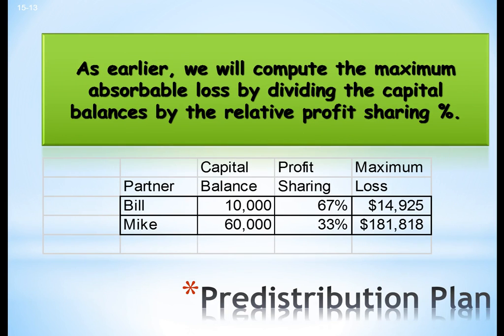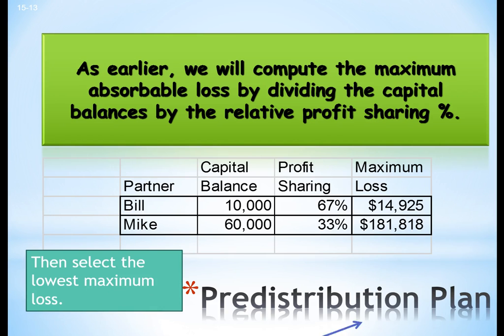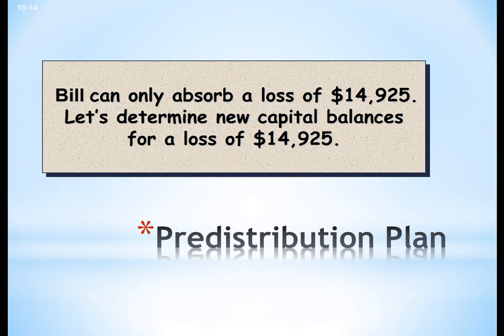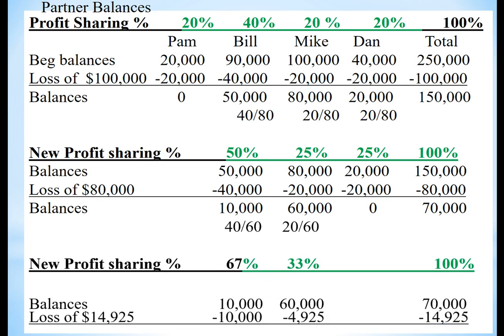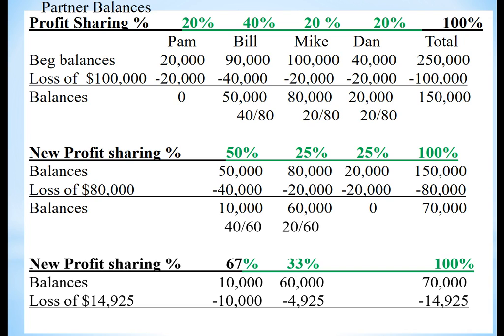We go through the process again, and now our lowest is $14,925 for Bill. Bill can only absorb a loss of $14,925. So let's determine new capital balances for a loss of $14,925. We allocate the $14,925, which zeroes out Bill and leaves Mike as the last remaining partner.